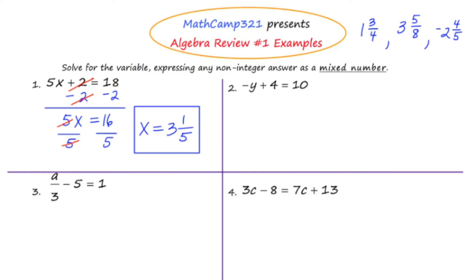Let's move to number 2. The equation in number 2 says, negative y plus 4 is equal to 10. My objective is to get that y completely isolated. The first thing I'm going to do is subtract 4 from both sides. When I do that, 4 and negative 4 are going to cancel from the left side, and I'm going to be left with negative y is equal to 6.